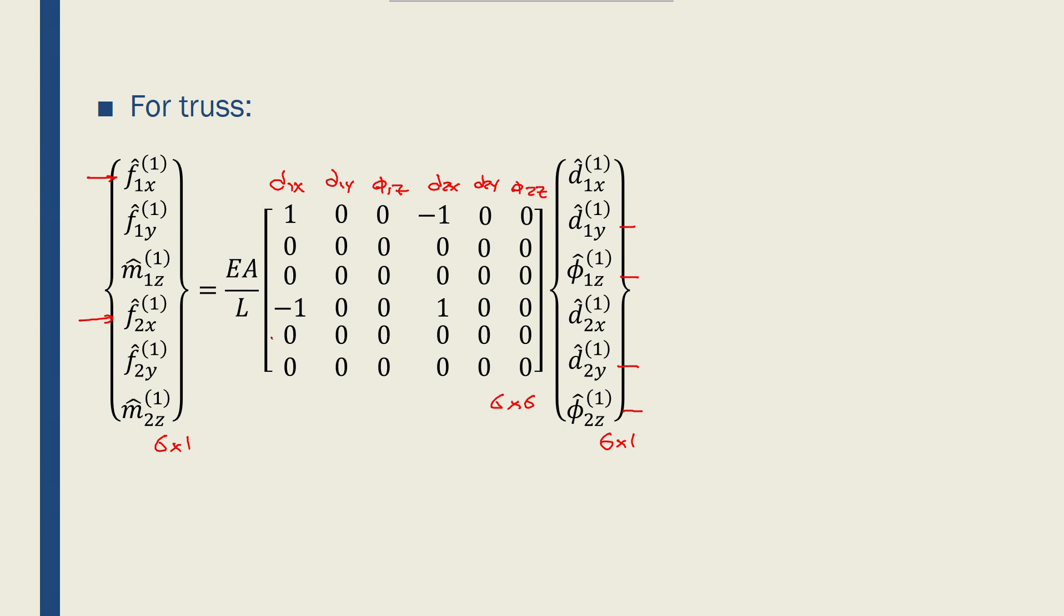and populate this matrix with the values from the local coordinate system or local stiffness matrix for a truss that I found before. I know that D1x and D1x would be 1, so this one would be 1. D2x, D1x would be minus 1 there. D1x and D2x would be minus 1 here.